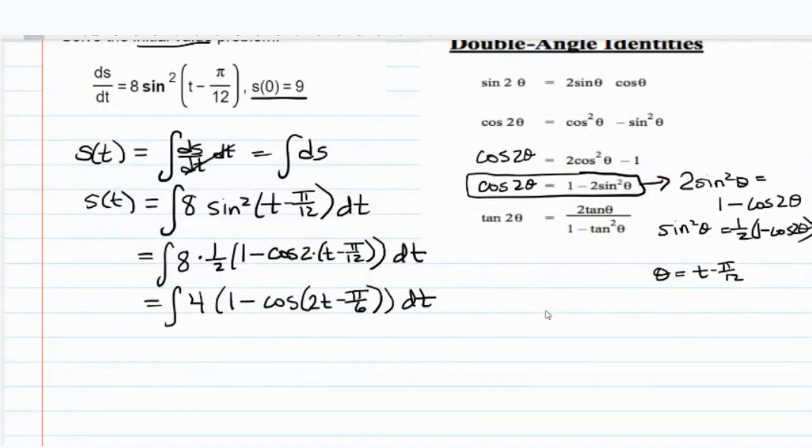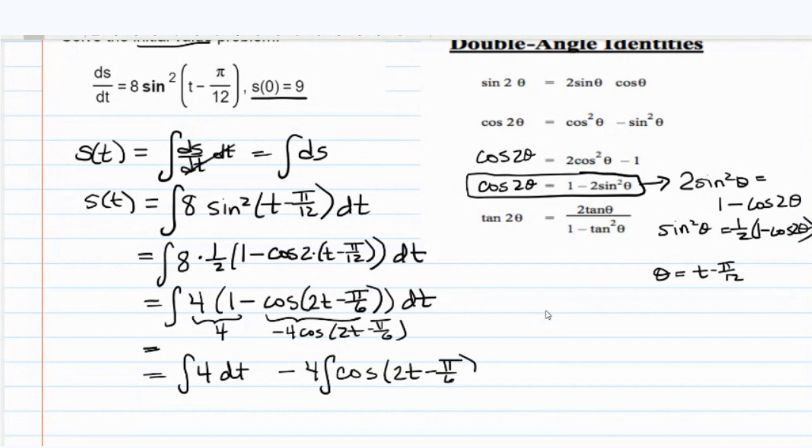Now, I think I probably would go ahead and distribute that 4 and break the integral apart into two integrals, one for 4 dt and one for negative 4 cosine of 2t minus pi over 6 dt. So that's going to be the integral of 4 dt minus 4 times the integral of the cosine of 2t minus pi over 6 dt.